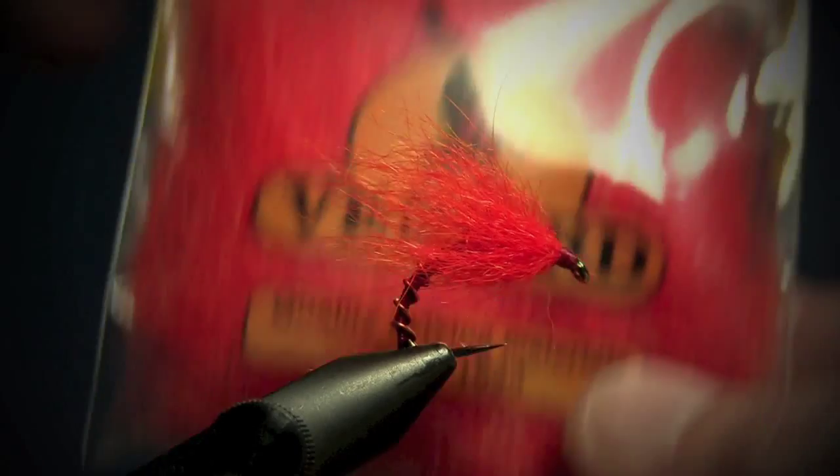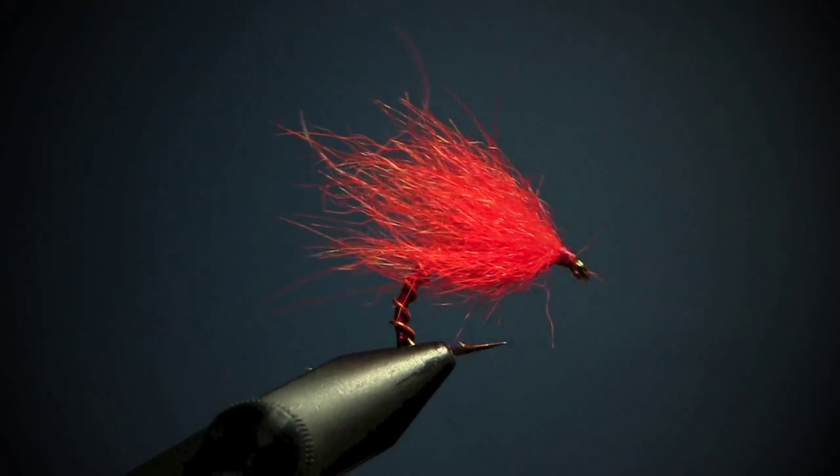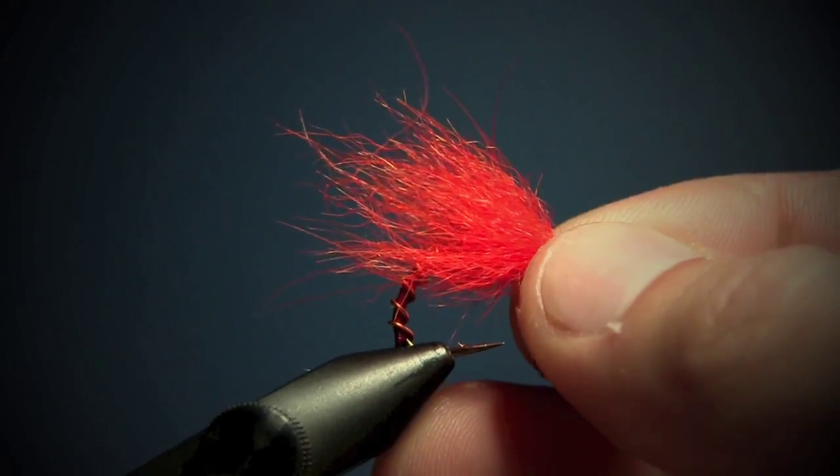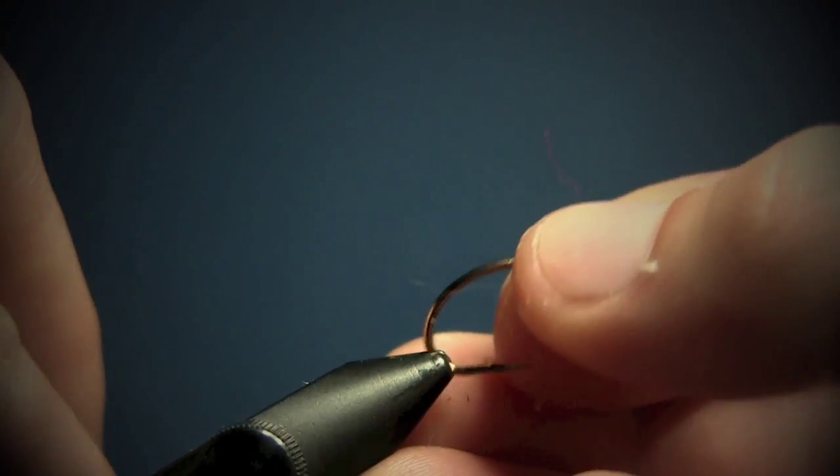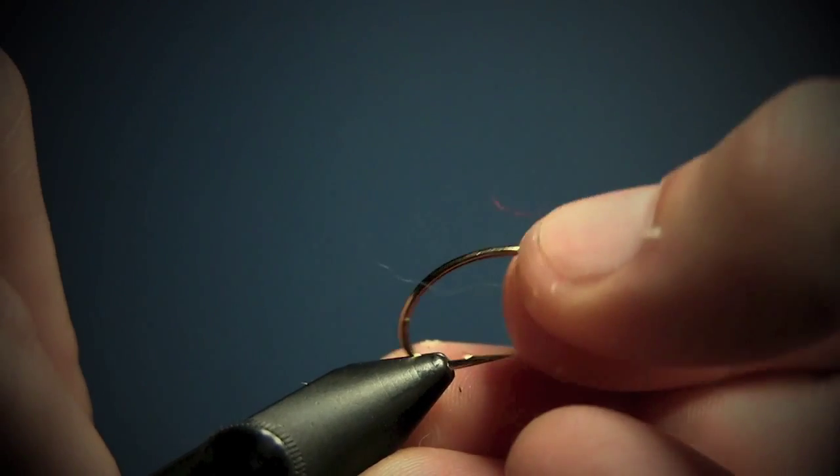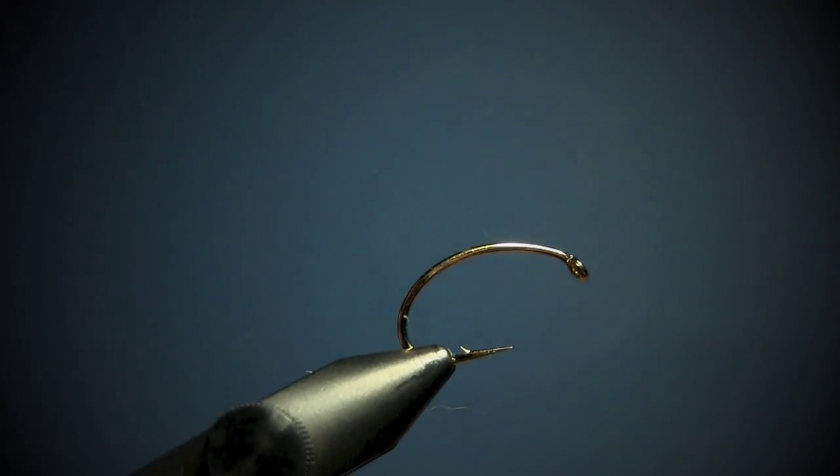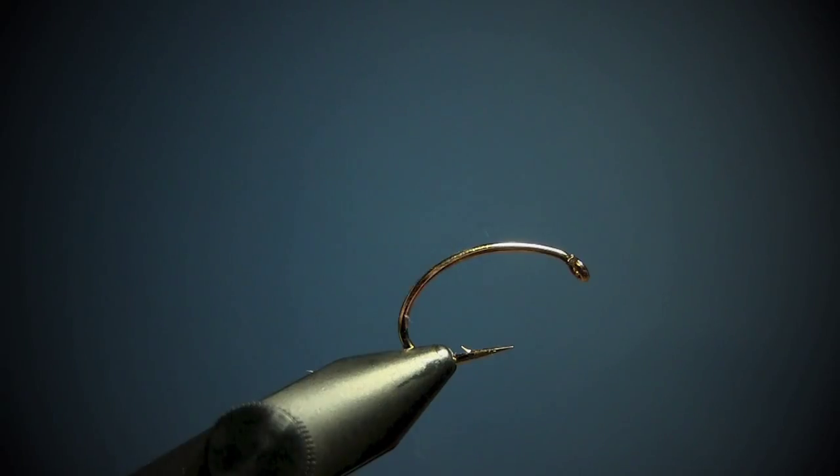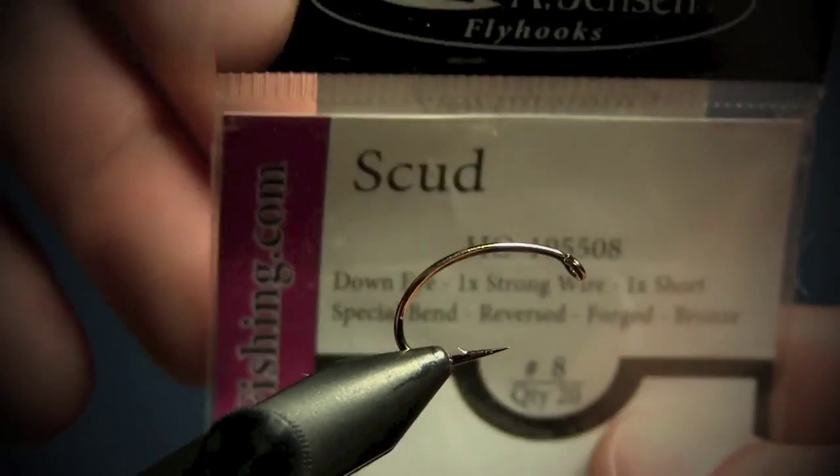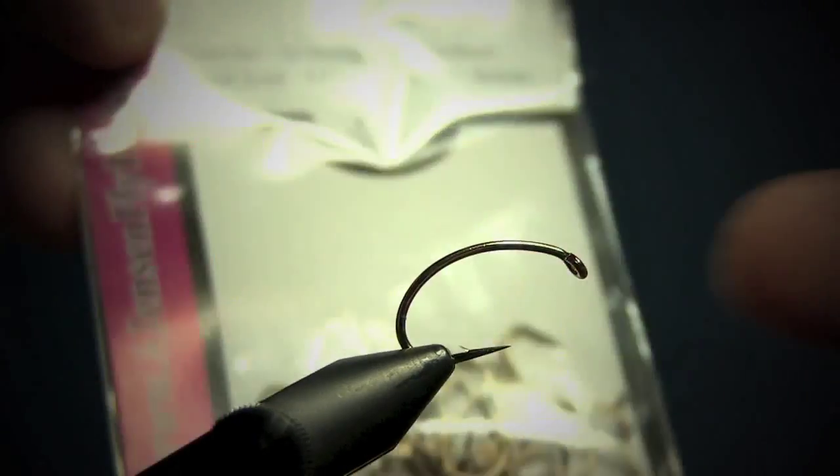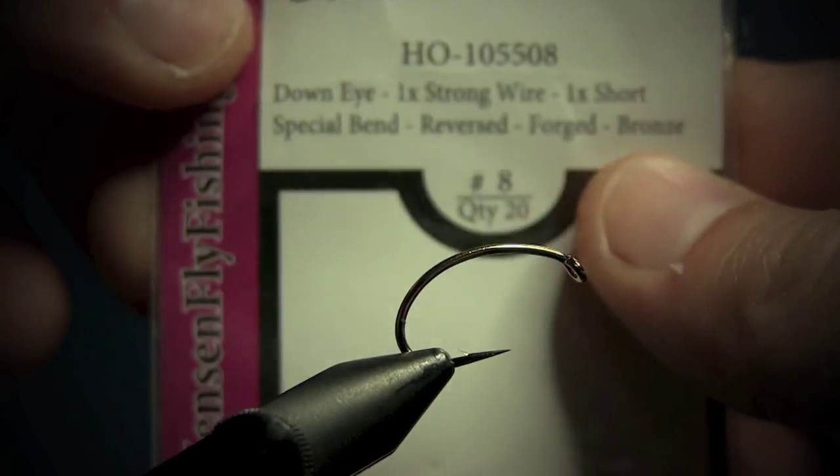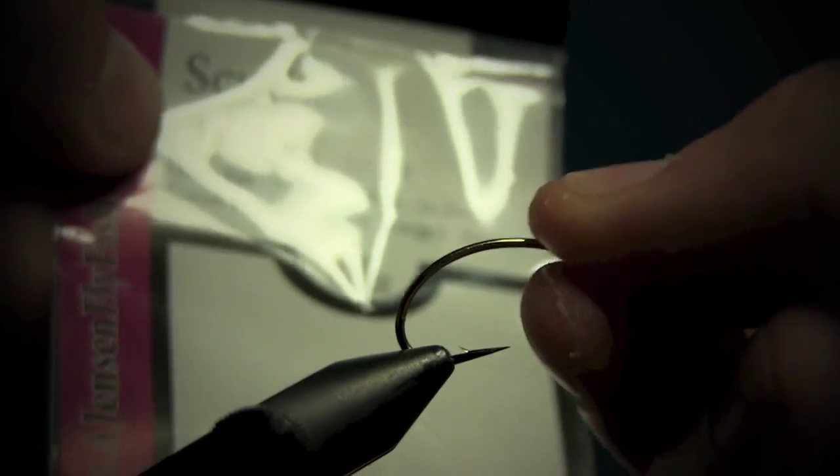This one is made with seal fur, and I'm using a scud hook. I like to use two types of scud hooks. I got this from Jensen, this is size 8, this is size 6.